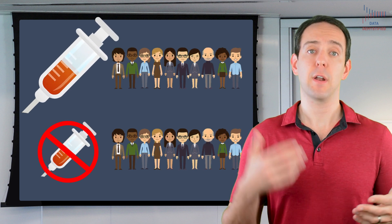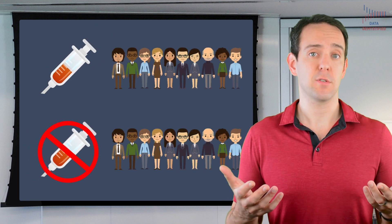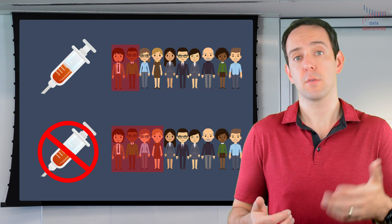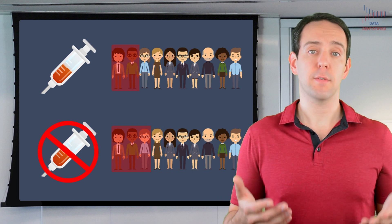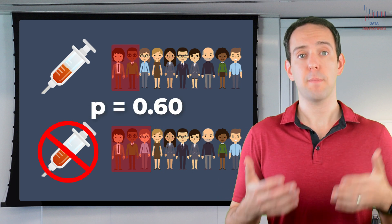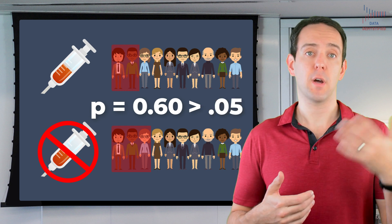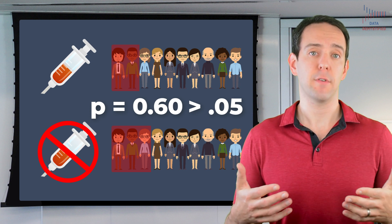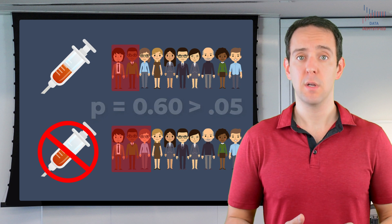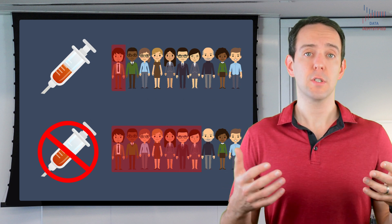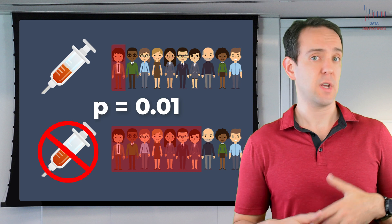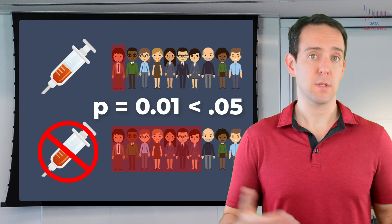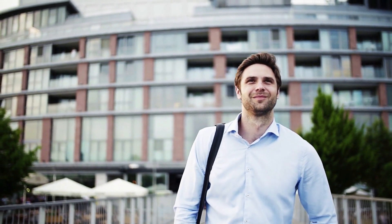Let's say we are comparing the efficacy of that heart disease drug to a control group that didn't get the drug, and we found that fewer people suffered from heart disease after taking it. We might find a relatively small difference between the two groups and get a p-value of 0.60, which is well above our cutoff of 0.05. That would mean the difference was so small that we don't have enough confidence to reject the null hypothesis that the drug doesn't work. In another case, we might see a large difference and get a p-value of 0.01 — less than 0.05 — so we say we do have enough evidence to reject the null hypothesis, and we start to build confidence that the drug is effective.